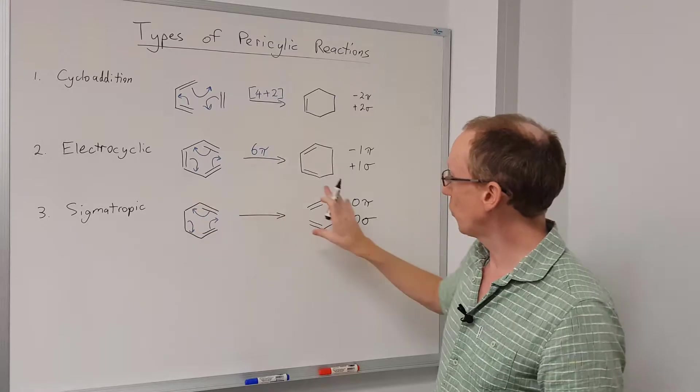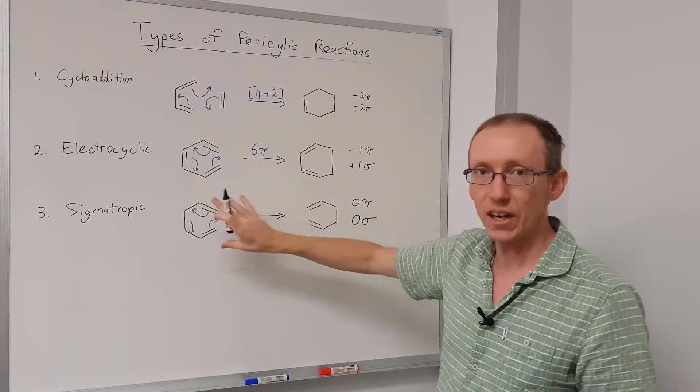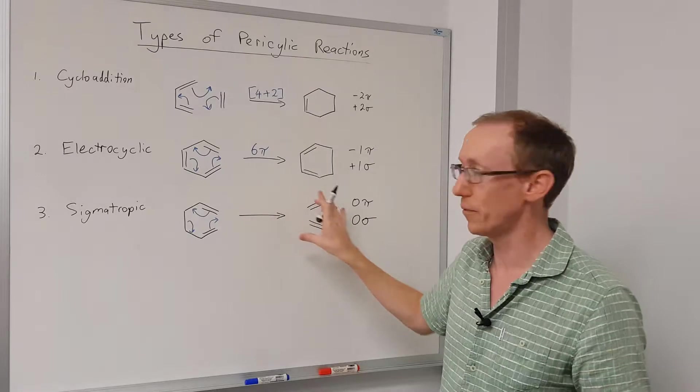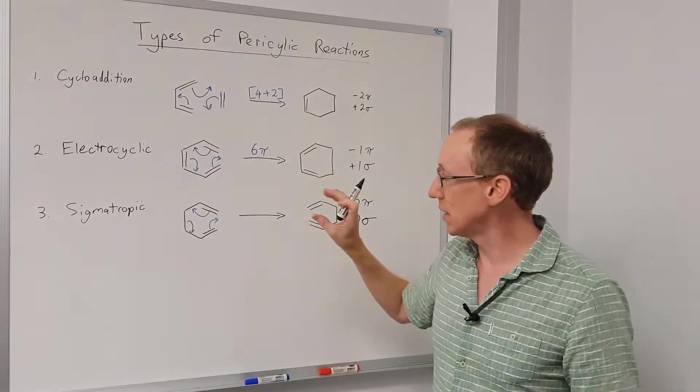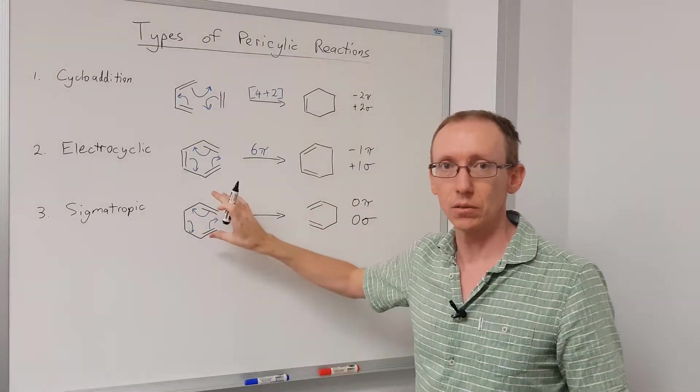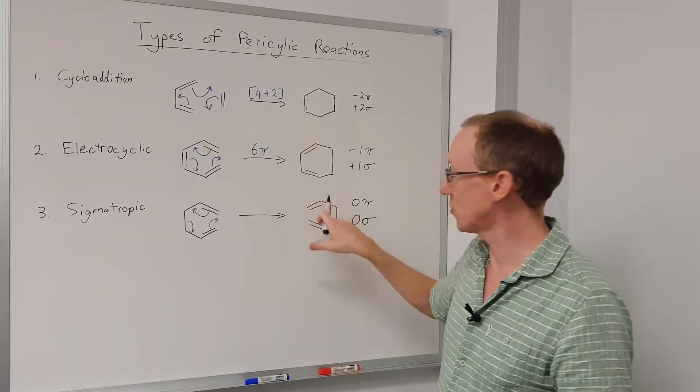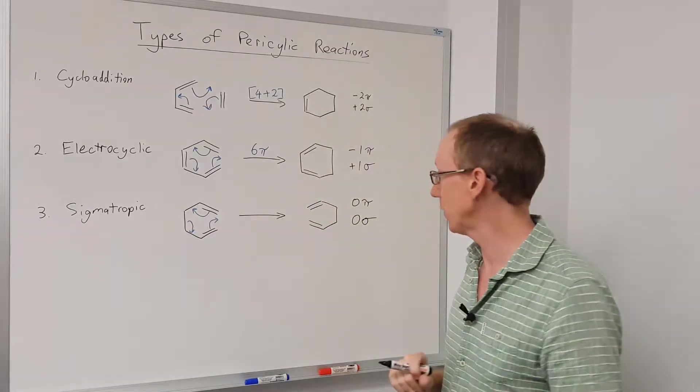So to predict which way the reaction will favor, which side of the reaction will be favored, we'll need to look in detail at the structural components of each side and see which one is likely to be more favored.